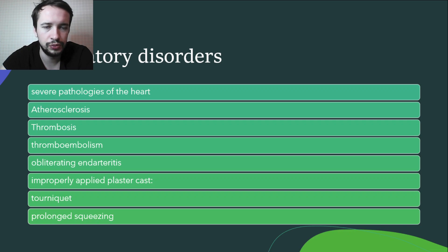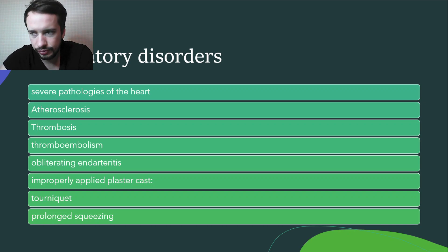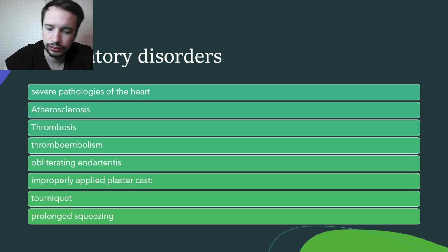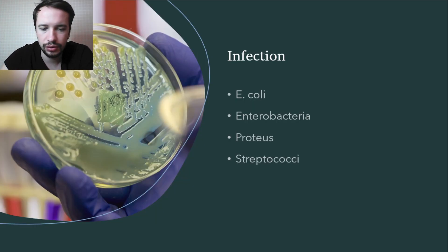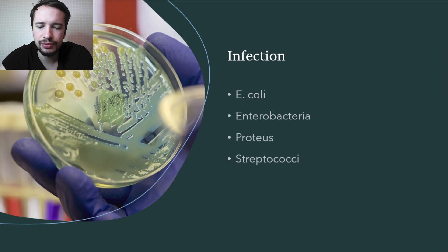Gangrene can also happen if a patient has obliterating endarteritis, an improperly applied plaster cast, prolonged tourniquet use, or prolonged squeezing of tissue. Infection can also develop during injuries. If the wound channel has a small opening and a large length — for example, gunshot and stab wounds — ideal conditions for infection exist. In patients with diabetes mellitus and vascular pathologies, gangrene can develop even due to a small wound.